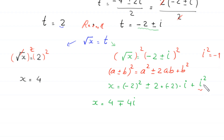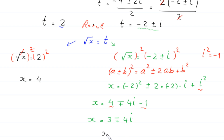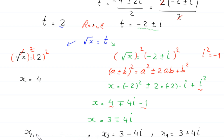So from here we get two complex values: x₃ equals 3 minus 4i, and x₄ equals 3 plus 4i. Combined with the earlier result x₁ equals x₂ equals 4, we have four solutions in total for this equation.